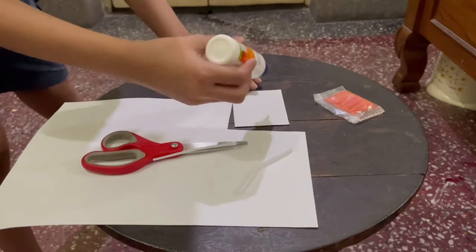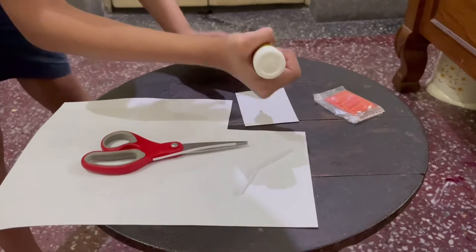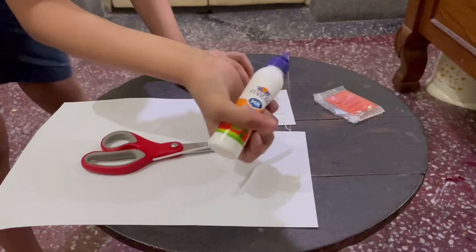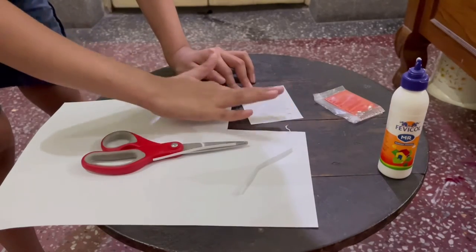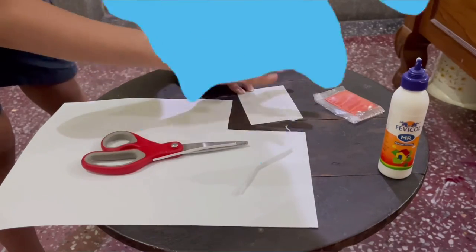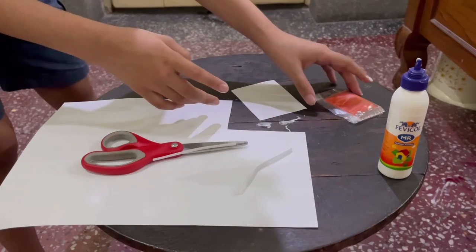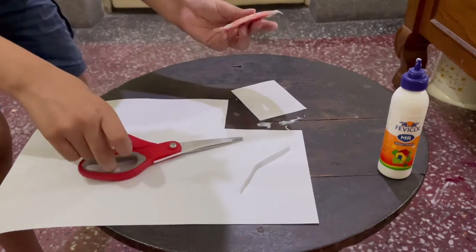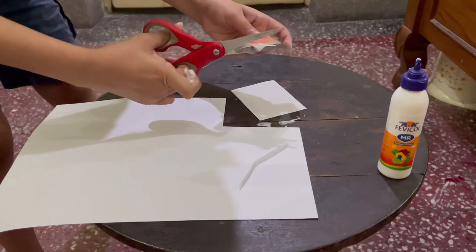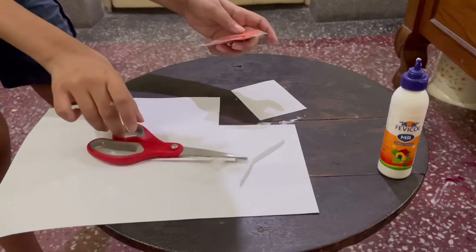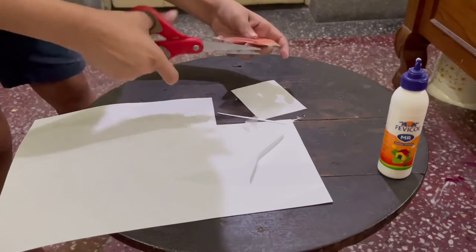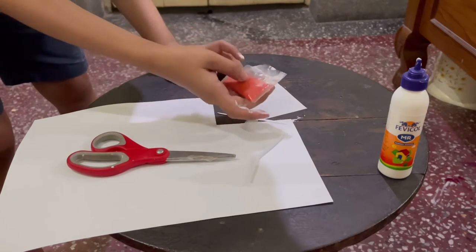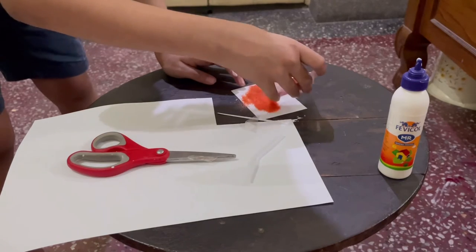So we will take some glue and spread it out on the piece of paper. Then we will cut a small gap in the sand packet and then we shall sprinkle the sand over the square.